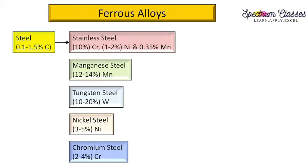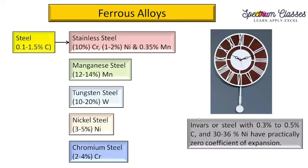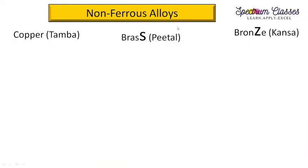One objective question that has been asked: the pendulum of a watch is made of Invar steel, which has a composition of 0.3–0.5% carbon and 30–36% nickel. We use Invar in the pendulum of a watch because it has practically zero coefficient of thermal expansion.